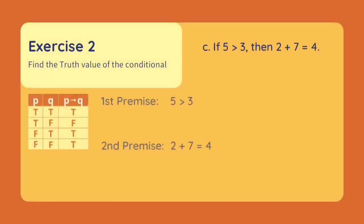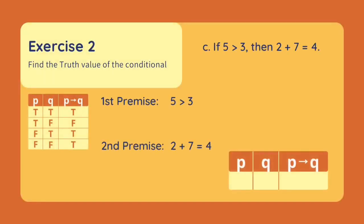Let's have a last one. If 5 is greater than 3, then 2 plus 7 equals 4. Our first premise is '5 is greater than 3.' This is true because 5 is indeed greater than 3. Our second premise is '2 plus 7 equals 4.' This is false because 2 plus 7 equals 9. Since our antecedent is true and our consequent is false, our conditional is false.